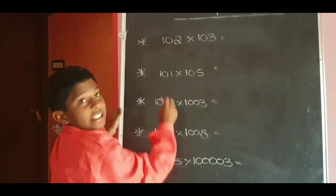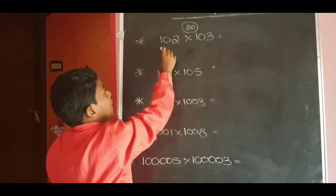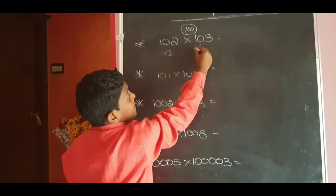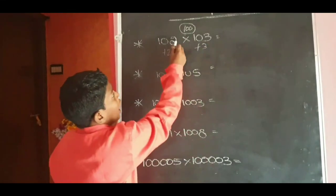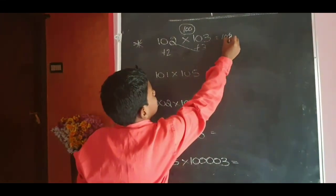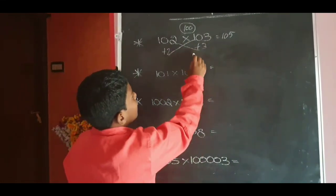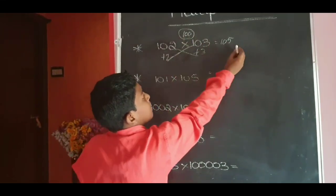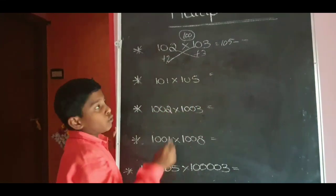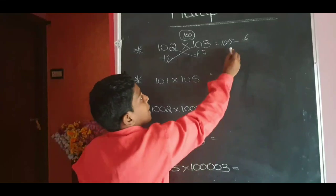Next: 102 into 103. This is nearest to 100. For 102, plus 2; for 100, 103 plus 3. 102 plus 3 equals 105. After, 100 means two zeros — still two digits. 2 into 3: two digits are 6. Single digit, so write as 06. The answer is 10506.